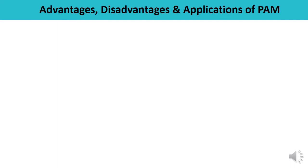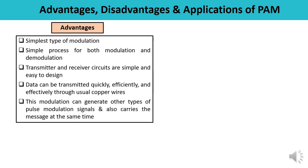Now let us talk about the advantages, disadvantages, and applications of PAM. The first important advantage is that PAM is the simplest type of modulation. The transmitter and receiver circuits are very simple and easy to design. Data can be transmitted very efficiently, quickly, and effectively. This type of modulation can also generate other types of pulse modulation signals and carries the message at the same time.